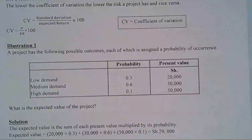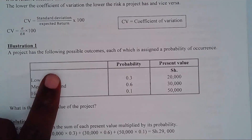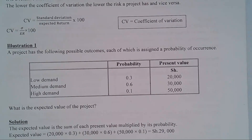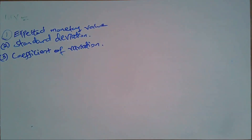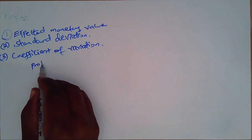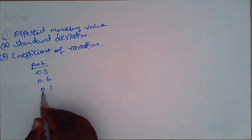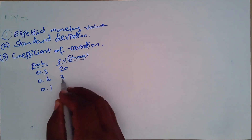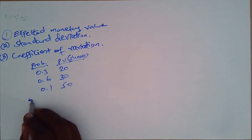If you are given an illustration like this one from this book, where a project has the following possible outcomes, each of which is assigned a probability of occurrence — we have probabilities of 0.3, 0.6, and 0.1, and corresponding present values of 20, 30, and 50 thousand shillings — what is the expected value of the project? The expected value of the project is the same as the expected monetary value.